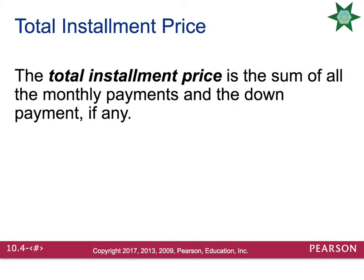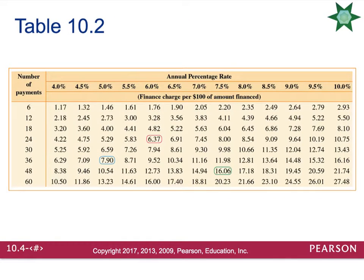The total installment price is the sum of all the monthly payments and the down payment if there was one. Table 10.2 is something you may want to print out — I did put it in the online notes — and it calculates the actual annual percentage rate for you. For example, if you had a loan that required 24 payments and they told you that you were paying 6% interest, by the time you actually pay the loan off with the installment plan, you'll have actually paid 6.37% interest.